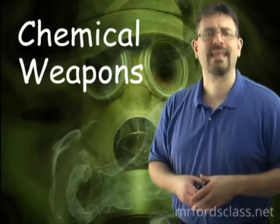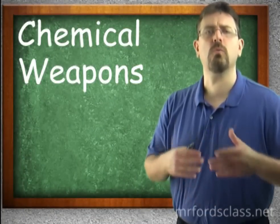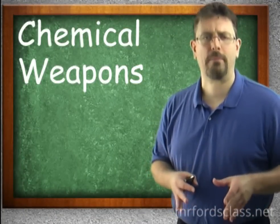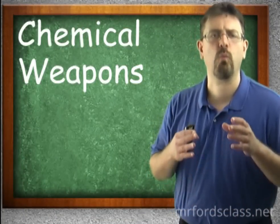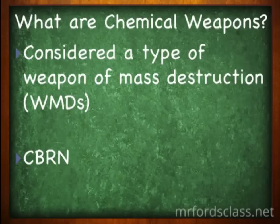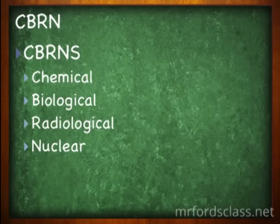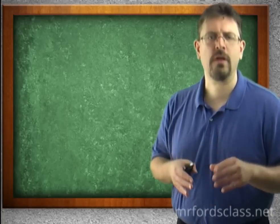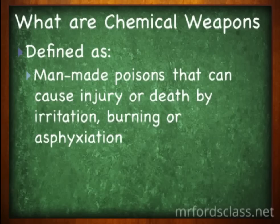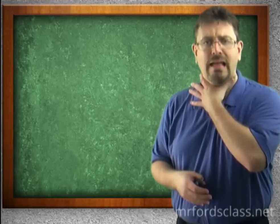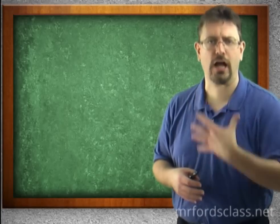We begin by looking at chemical weapons. First of all, what are chemical weapons? Chemical weapons are considered a type of weapon of mass destruction, WMD — CBRN: chemical, biological, radiological, and nuclear. In this case, the C for chemical is the chemical weapon. Chemical weapons are defined as man-made poisons that can cause injury or death by irritation, burning, or asphyxiation — that's where you can't breathe, you can't get oxygen where it's supposed to go.